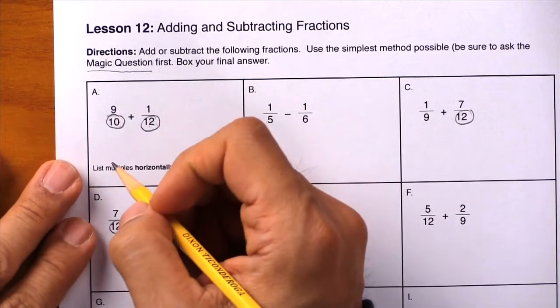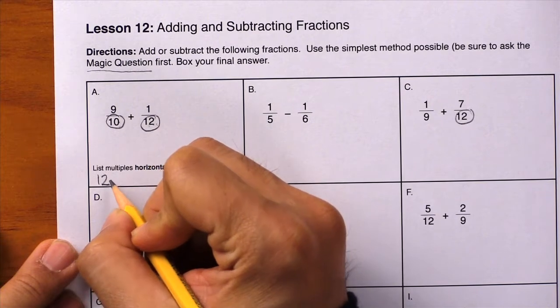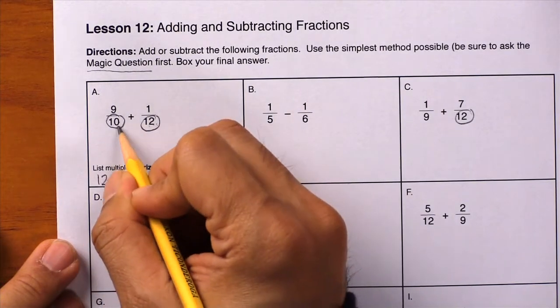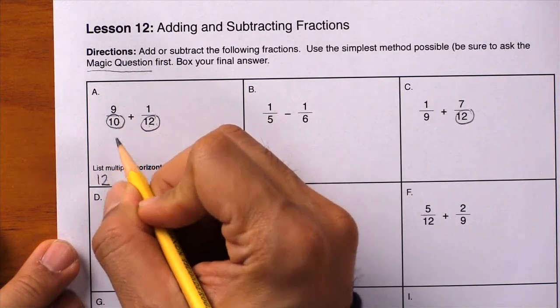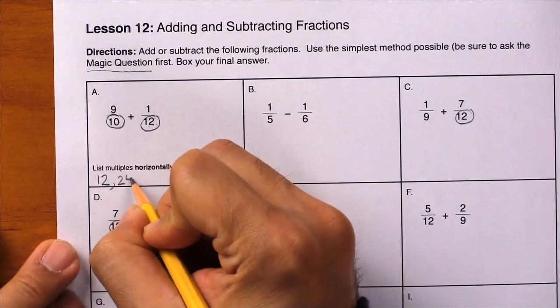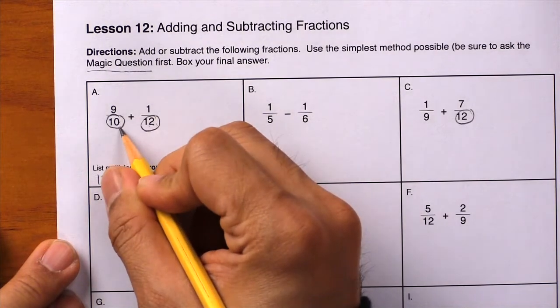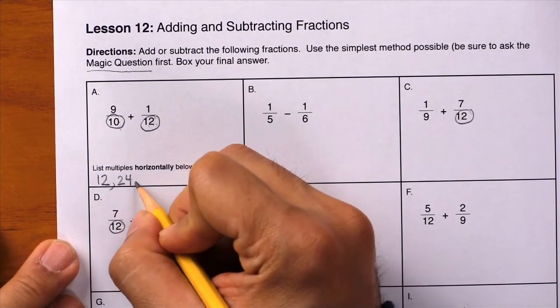Here we go. Counting by 12, we have 12 and stop. Can you do 12 divided by 10 evenly? Answer is no, so keep counting by 12. Next is 24 and stop. 24 divided by 10? Nope, keep counting by 12.